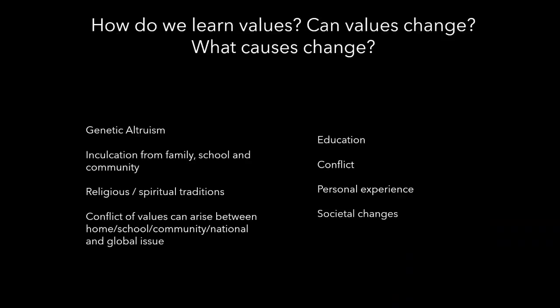So how do we learn values? Can values change in our lifetime? What causes change? Genetic altruism is the idea that we are human beings who like to help each other — it's kind of embedded in our genetics. There's also inculcation from family, school, and community. We learn about our values from our own families. Religious beliefs can influence our values, and there can be a conflict between values at home and what students are learning at school. Global issues seen in media can also start to influence changes in values.